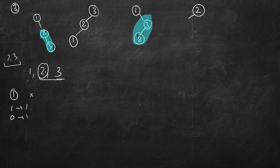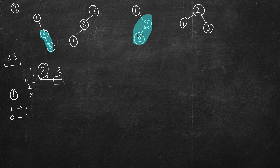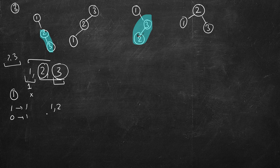The base cases are: for one node there is one way, for zero nodes there is also one way. When two is the root, we arrange one node in the left subtree and one node in the right subtree — each can be arranged in just one way, so only one possibility. When three is the root, there is nothing in the right subtree since no element is larger than three, and one and two go in the left subtree in two ways.